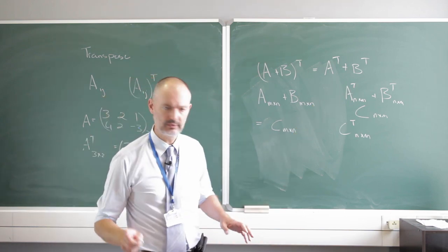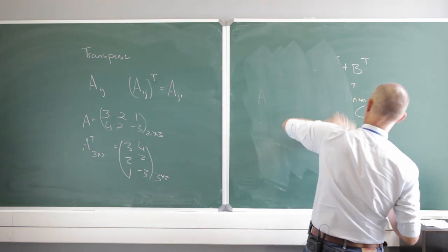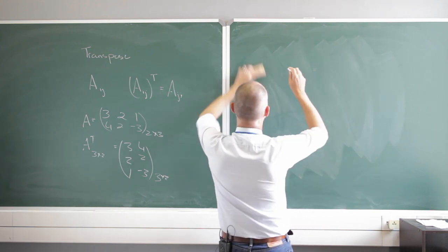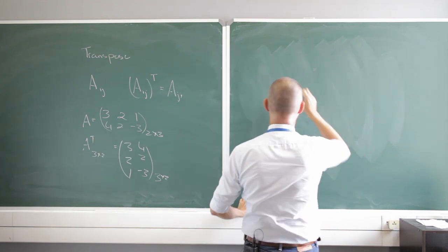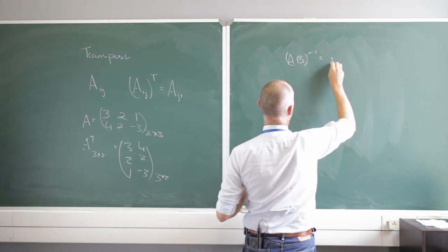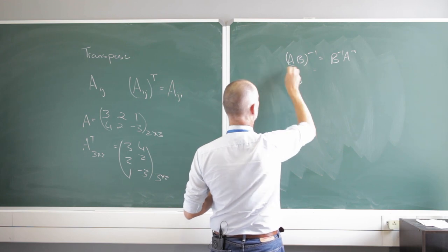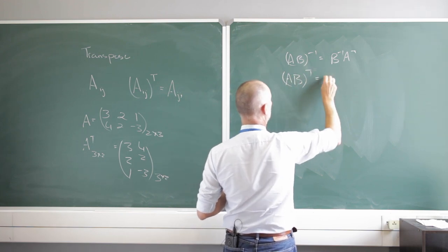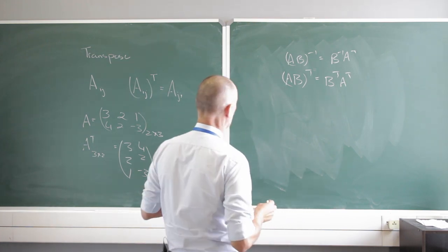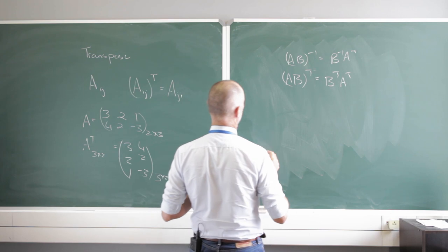Where it gets tricky is multiplication. An easy way to remember this: recall that (AB)^{-1} = B^{-1} A^{-1}. The same idea applies to transpose. The transpose of AB multiplied first is B^T times A^T. Let's look at the dimensionality to see that it makes sense.